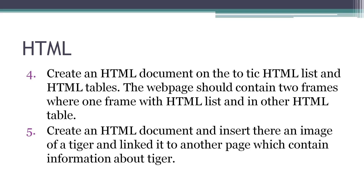The last HTML question is related to links: create an HTML document and insert an image of a tiger or perhaps a flower. On the first page you will insert one image and make that image act as a link, connecting to some other page that contains information about the image. You will use an image as a link, and also add simple CSS like page background color, margin, and padding.